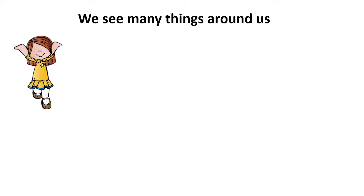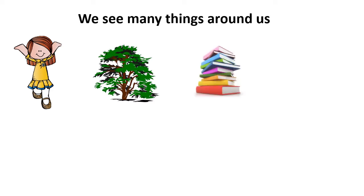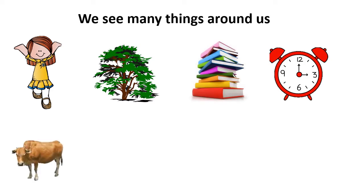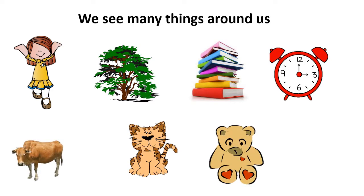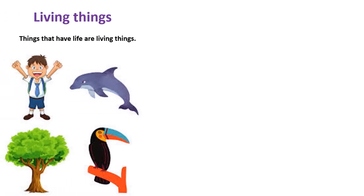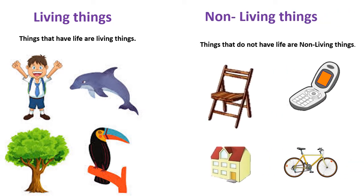We see many things around us. Some are living things while some are not living things. Things that have life are living things, like human beings, animals, and plants. Things that do not have life are non-living things, like chairs, houses, bicycles, and mobile phones, and many more.